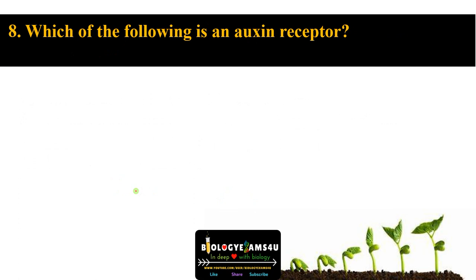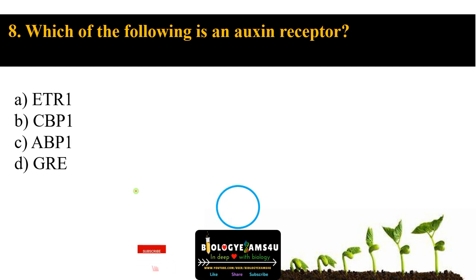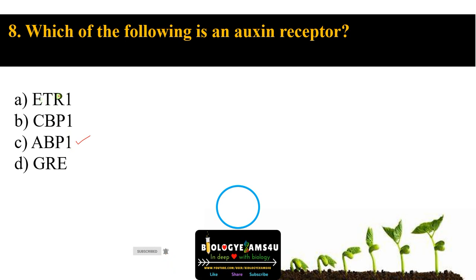Question number eight: which of the following is an auxin receptor? Option A ETR-1, option B CBP-1, option C ABP-1, option D GRE. The answer is ABP-1 — auxin binding protein 1. ETR-1 is the ethylene receptor, CBP-1 is cytokinin binding protein, and GRE is the gibberellin response element. So option C is the answer.